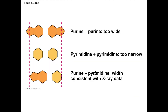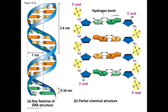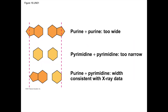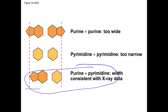Another part of Chargaff's rule is that besides A always pairing with T and C always pairing with G, you always have a purine paired with a pyrimidine. Looking at the double helix, A (purine) always pairs with T (pyrimidine), and G (purine) always pairs with C (pyrimidine). This causes the diameter of the double helix — from one side to the other — to be uniform. If you had a purine with a purine, the helix would jut out; pyrimidine with pyrimidine, it would jut in. But purine always with pyrimidine gives a uniform diameter.